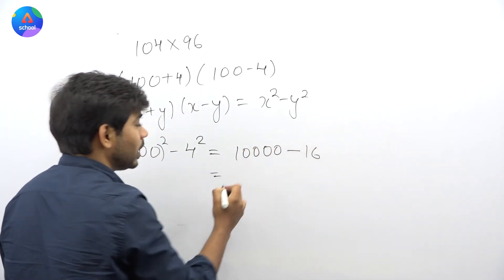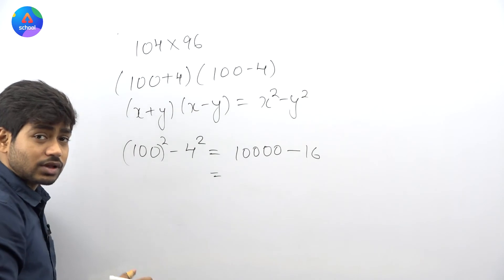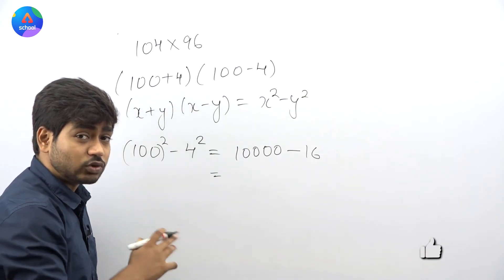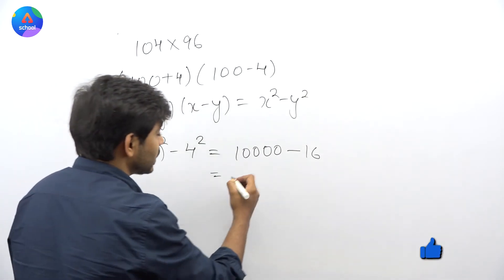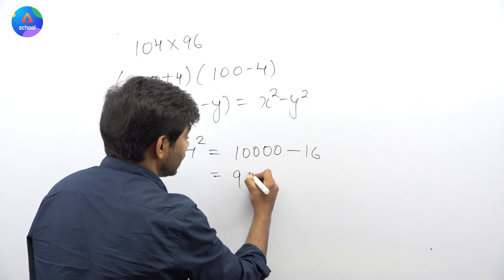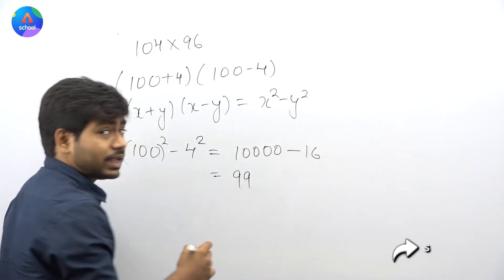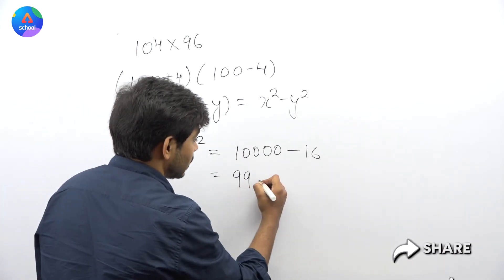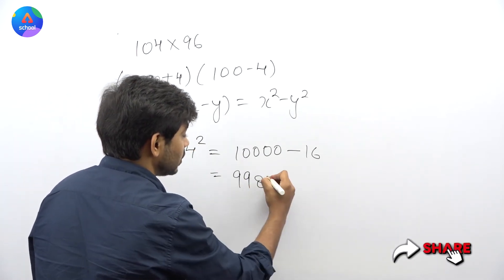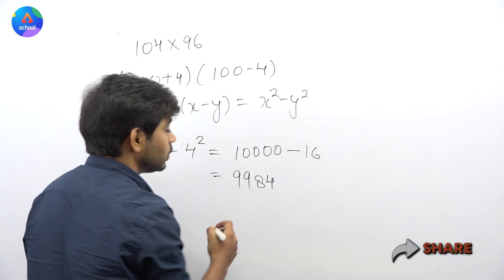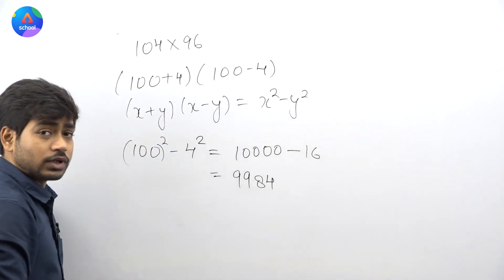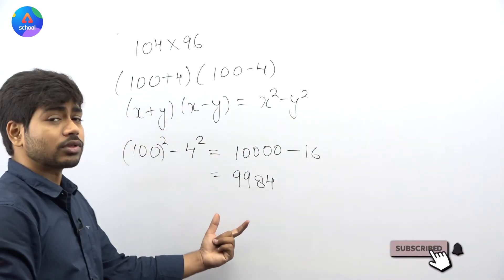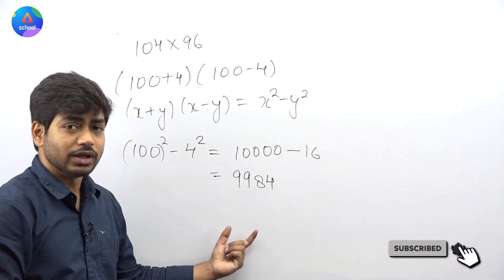100² − 4² = 10,000 − 16 = 9,984. So the answer for 104 × 96 is 9,984. This will be your answer.